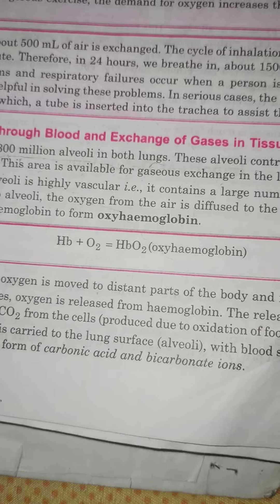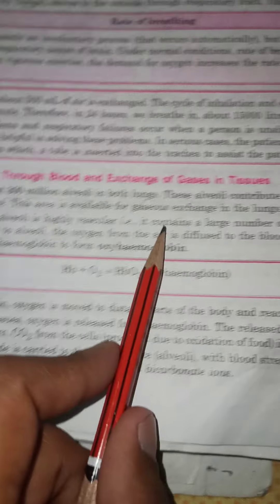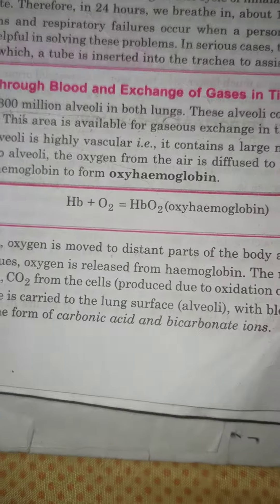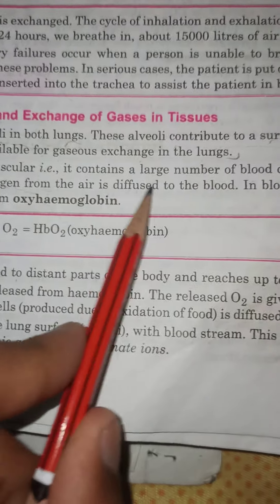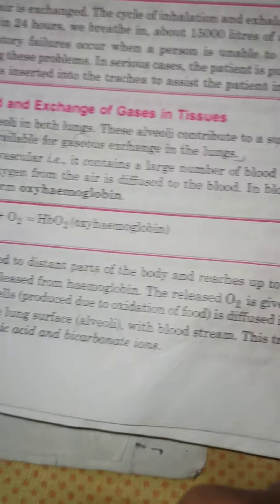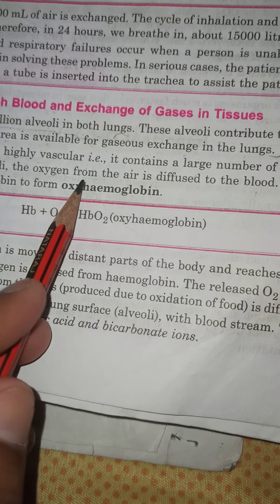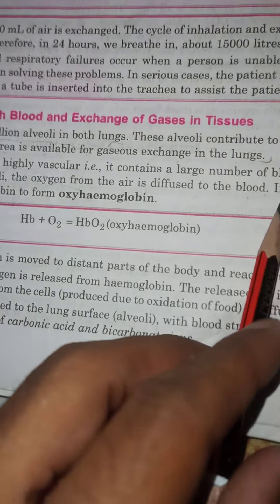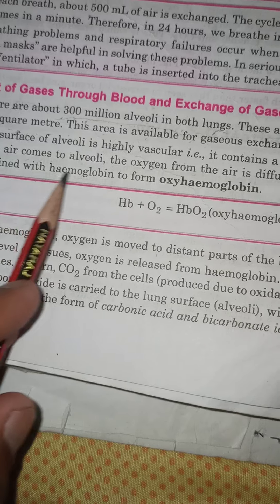The surface of alveoli is highly vascular. It contains a large number of blood capillaries. When fresh air comes to the alveoli, the oxygen from the air diffuses into the blood. In blood, the oxygen is combined with hemoglobin.